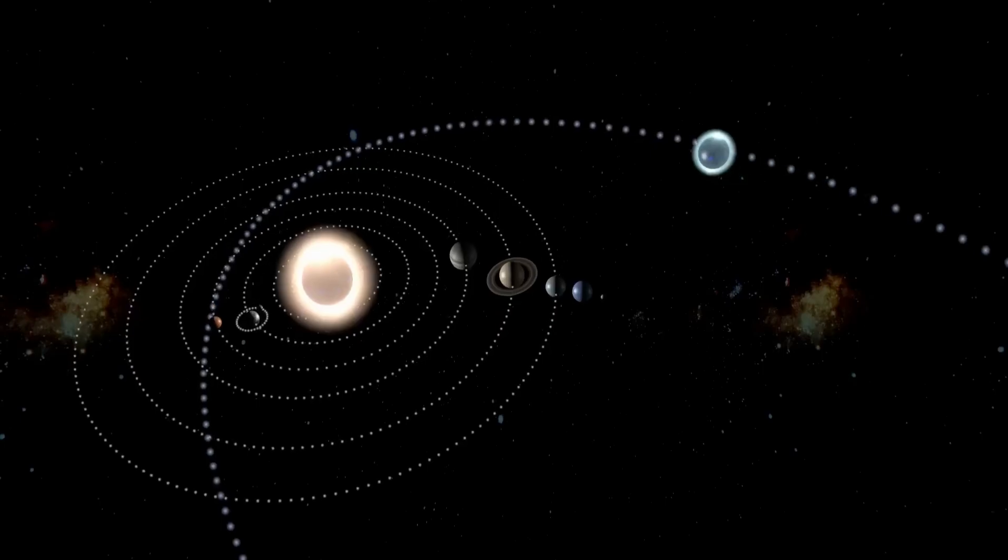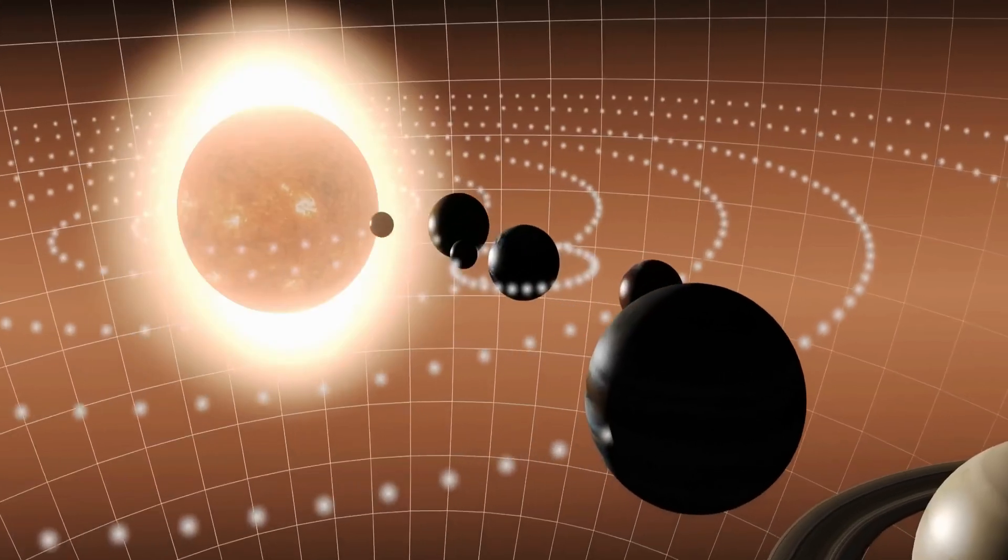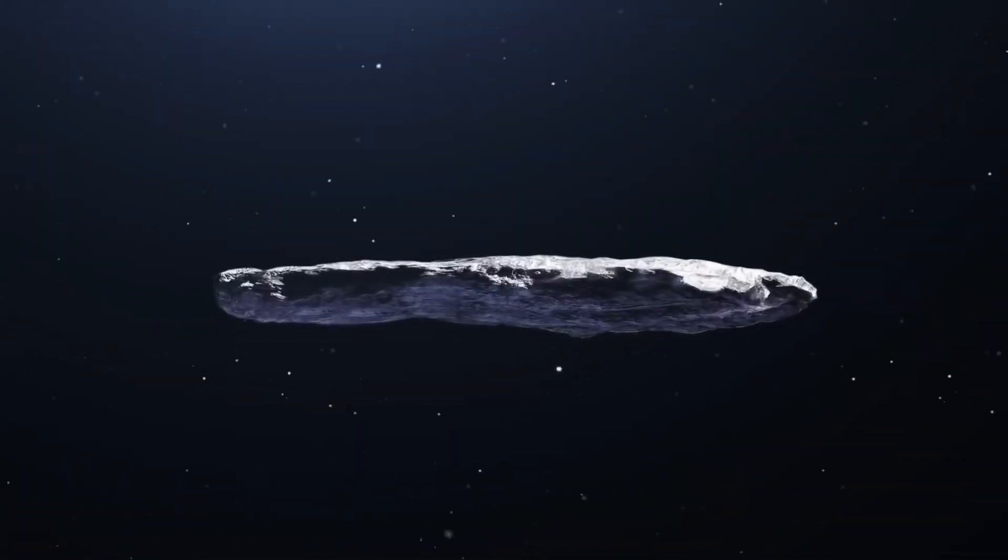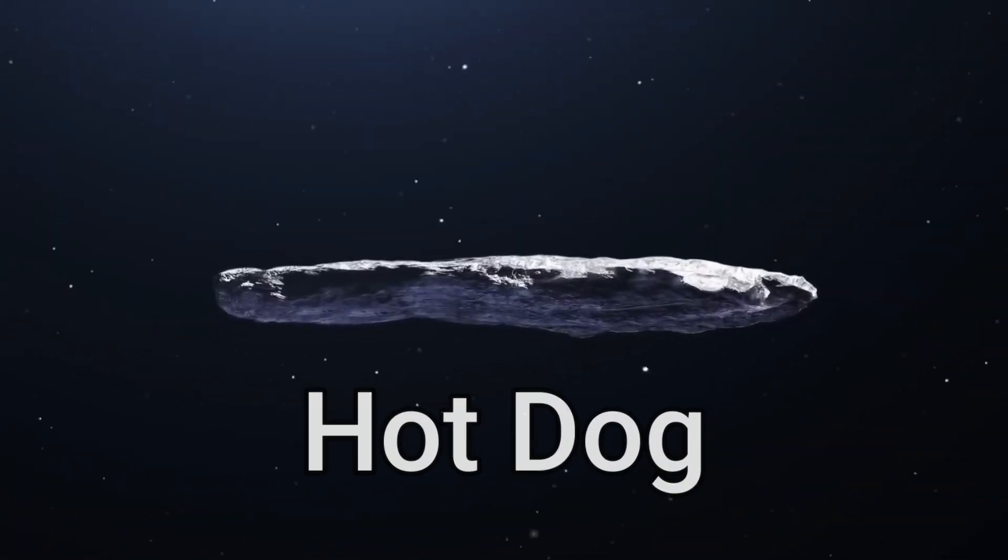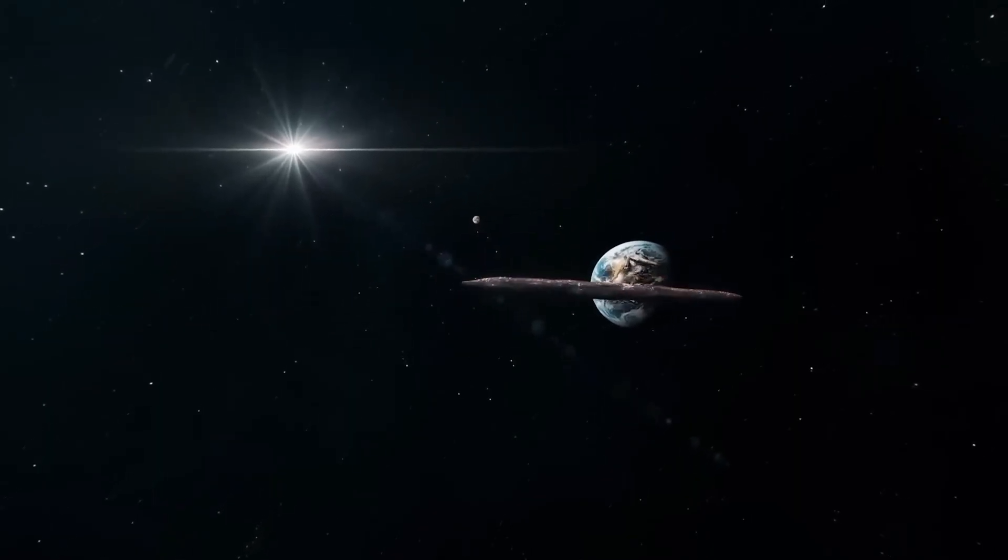It deviated from the typical space rock. Instead of the usual rounded or irregular shape akin to asteroids, this object resembled a stretched out sausage or hot dog. Scientists initially thought it might be an asteroid, but it didn't adhere to the norm.